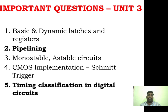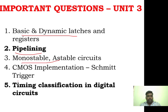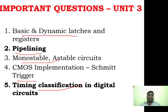Unit three is easier. If you do five questions, you can complete it. Topics include: CMOS implementation, Schmitt trigger, basic dynamic latches, pipelining, monostable circuits, and timing classification. The pipeline and timing classification are also important. If five questions are asked, definitely at least one will come from these areas.